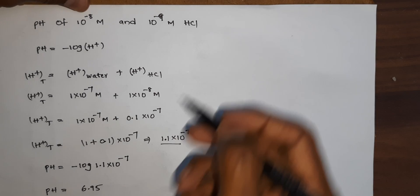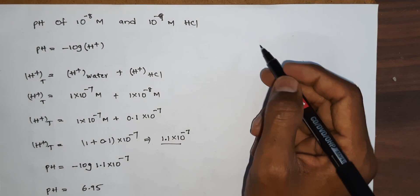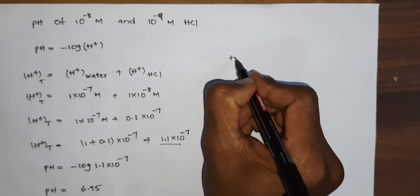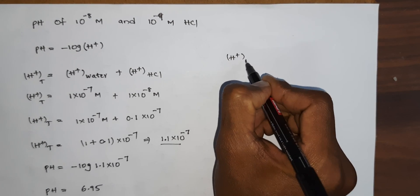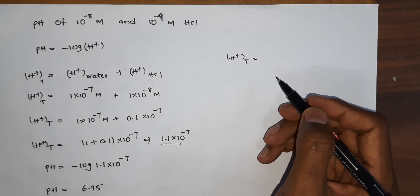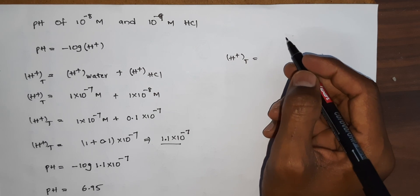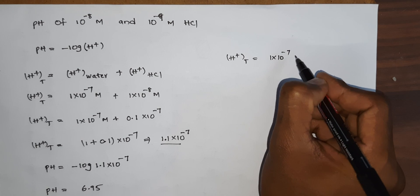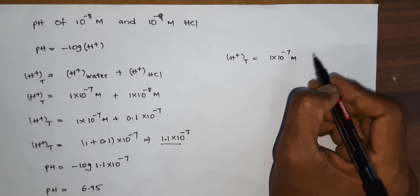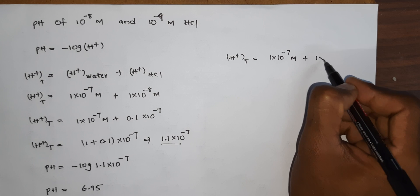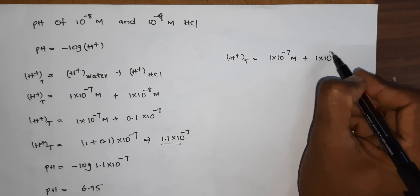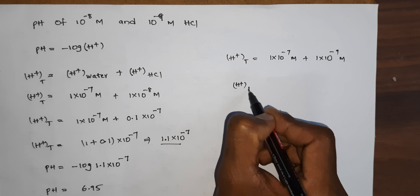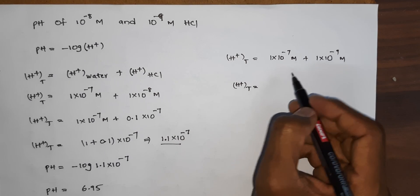Similarly, for 10⁻⁹ molar HCl — here also we have to consider water. So for water, H⁺ is 1×10⁻⁷ molar, and for HCl, H⁺ is 1×10⁻⁹ molar. Total H⁺ concentration is equal to the sum of both contributions.